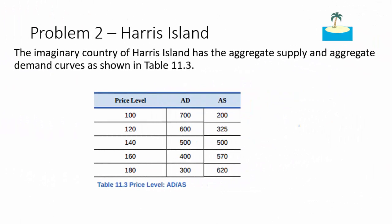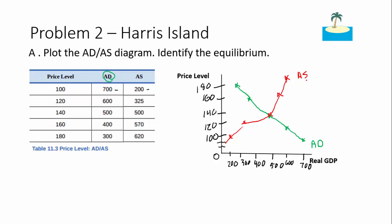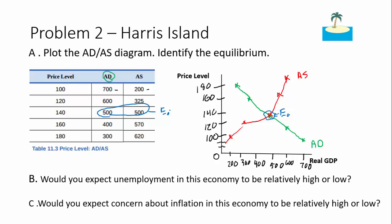Now we're on problem two, which is similar to the first. We need to plot aggregate demand and aggregate supply for Harris Island and identify the equilibrium. The aggregate supply and aggregate demand are mapped out, and the equilibrium E0 is identified in blue. We can confirm it by checking where the two curves match in the data table.